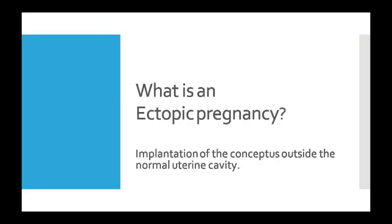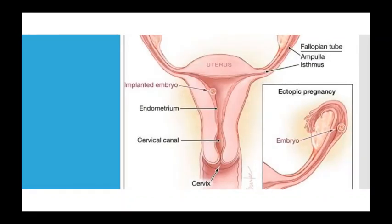So ectopic pregnancy — what is it? It is conceptus implantation outside the normal uterine cavity. The diagram shows a uterus with a fallopian tube, the ampulla part, the endometrium, the cervical canal, and the cervix.